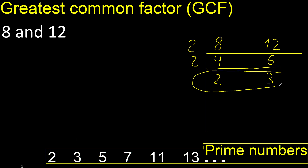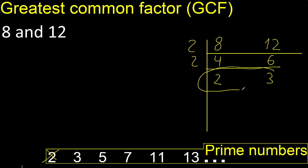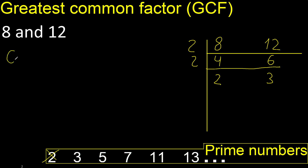Cannot be divided by 2 because 3 cannot be divided by 2. Cannot be divided by 3. 2 and 3 cannot be divided by the same number. Therefore, 2 multiplied by 2 is 4. Finish.